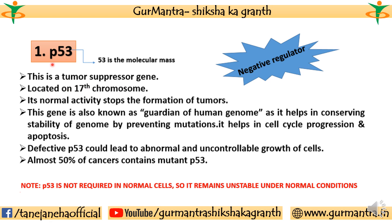Normally, p53 is located on the 17th chromosome. It represents the protein, and p53 refers to its molecular mass. The normal activity is that tumor formation is stopped. The important thing about p53 is that it is called the guardian of the human genome — because it helps in conserving the stability of the genome by preventing mutations, cell cycle progression, and apoptosis.